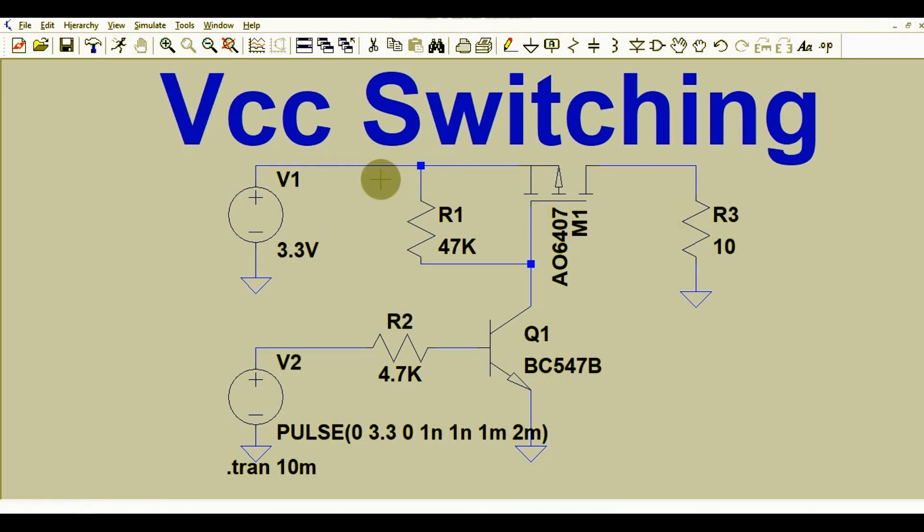you the test results of this circuit. Here you can see this is a 3.3 volt pulse generator coming from your microcontroller. This one is a current limiting resistor, 4.7k. Then we